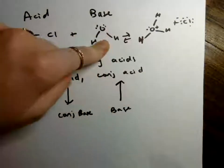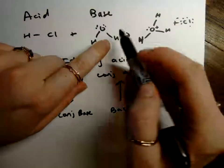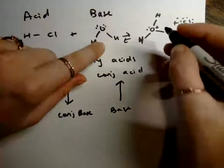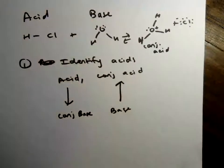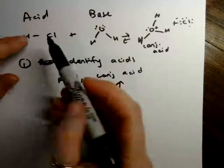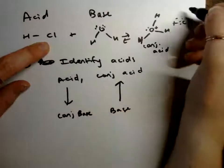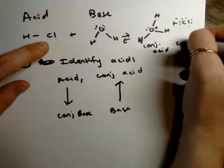So here we have our base, and that's going to the conjugate acid. This starts as water, it gains a proton, and this is our conjugate acid. This acid will go to the conjugate base. So it's Cl, it loses a proton, it becomes Cl minus. This is our conjugate base.